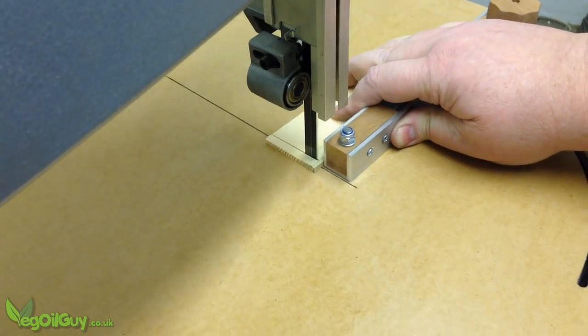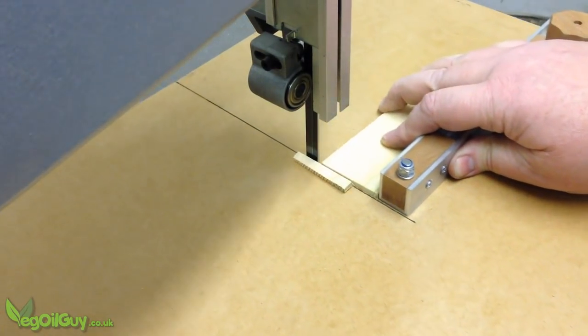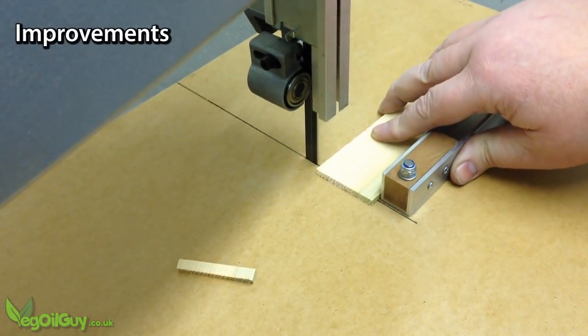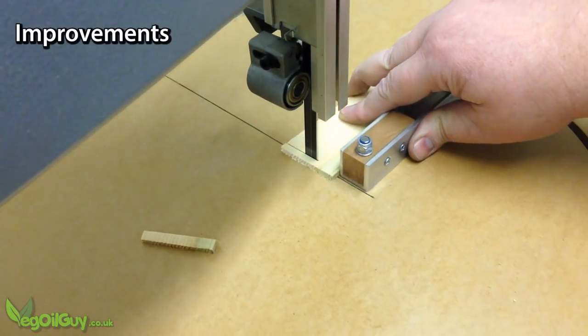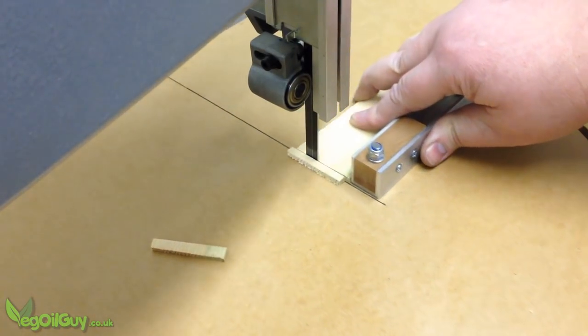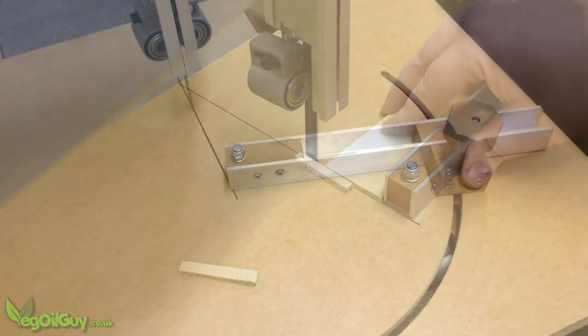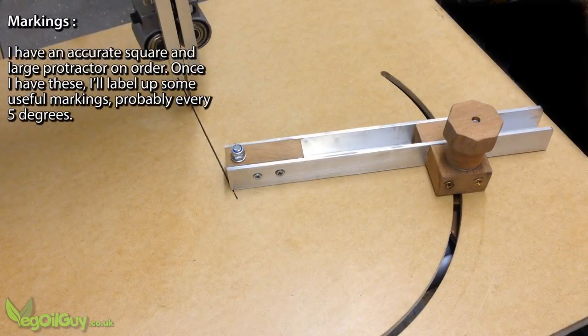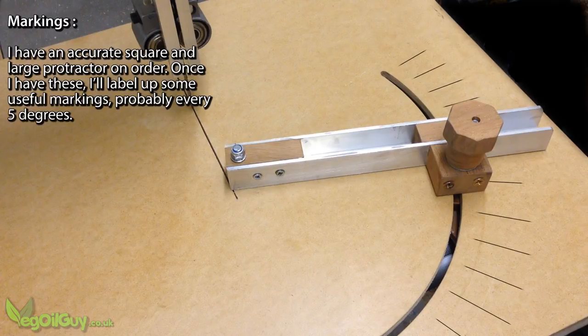And that's a finished mitre sled. Obviously, it's possible to add a few improvements to this sled. For starters, there's currently no markings and that's because I have an accurate square on order and I want to make use of this before I do any marking.